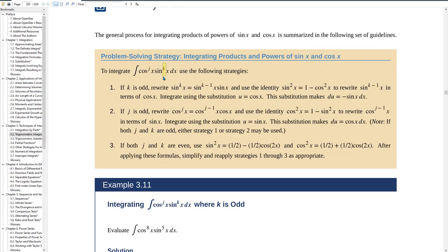Now, k is the exponent of sine. If k is odd, then you're in number one. If j is odd, we're in number two. And if they're both even, you're gonna have quite a bit more work to do. You need to use this half angle formula, which is some algebra.